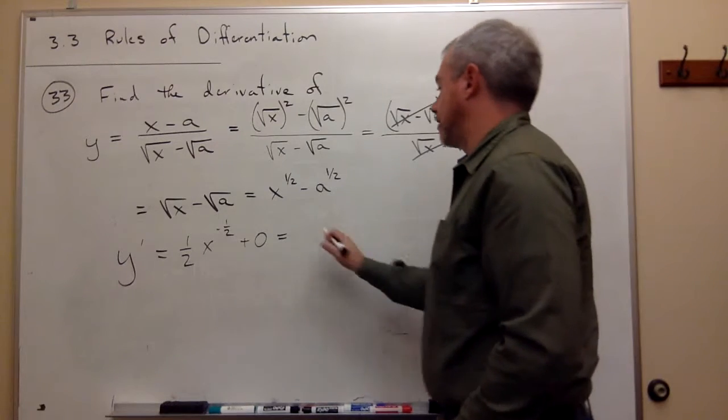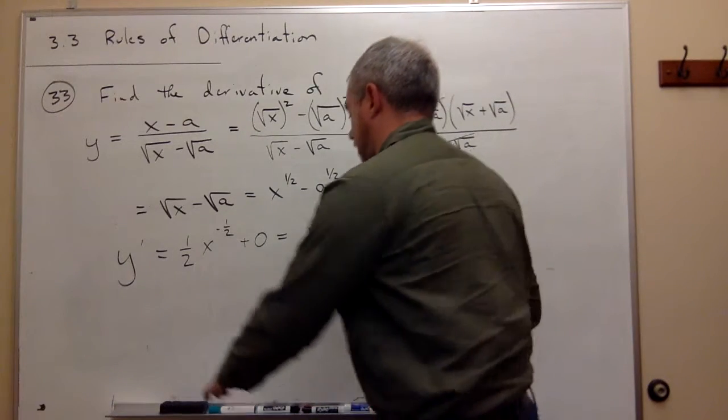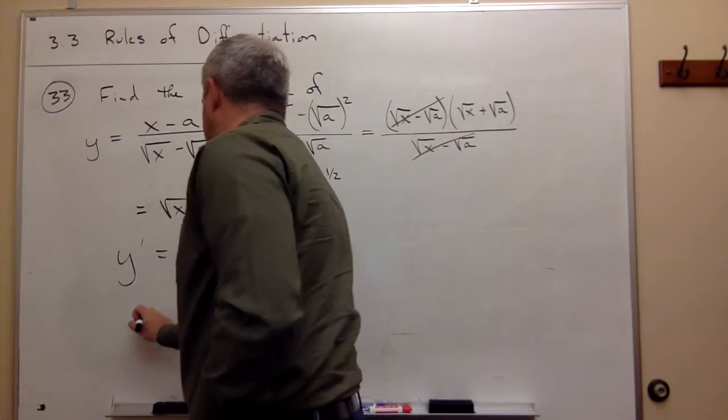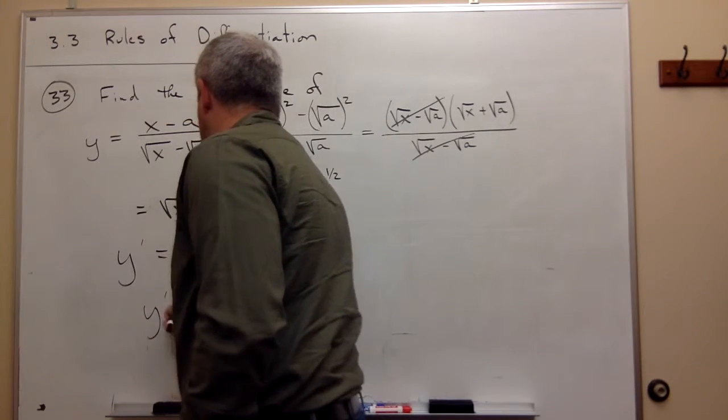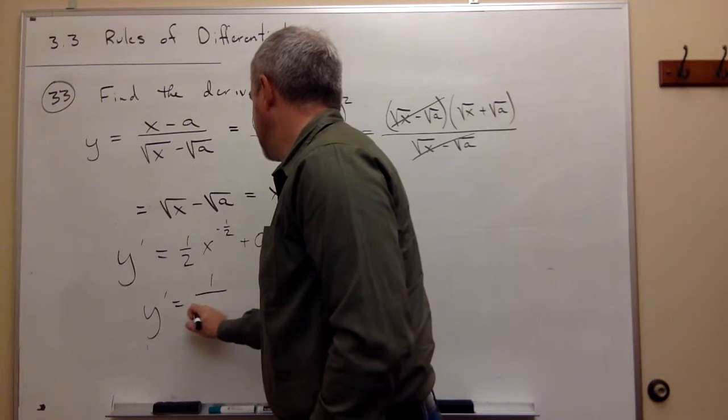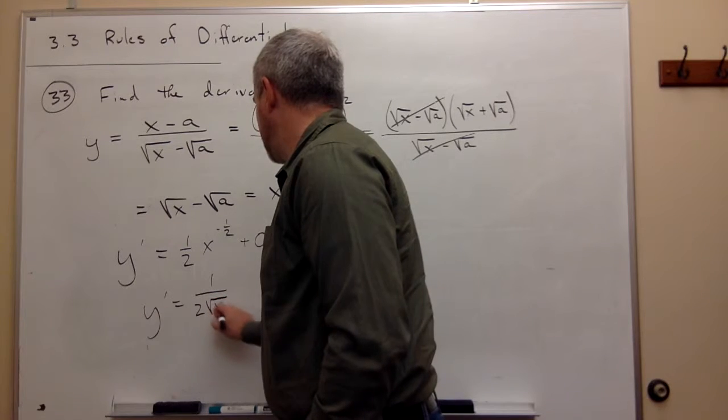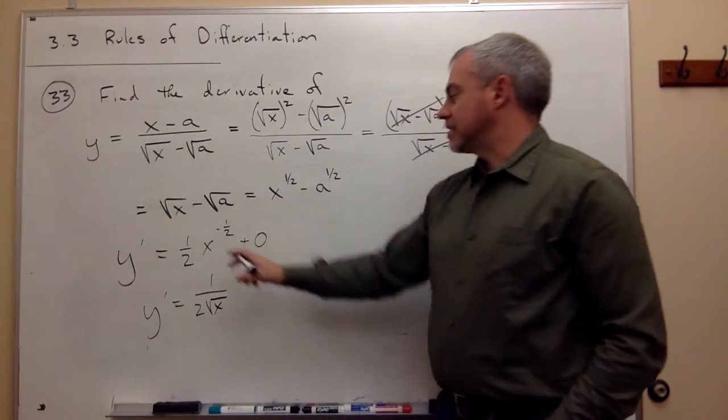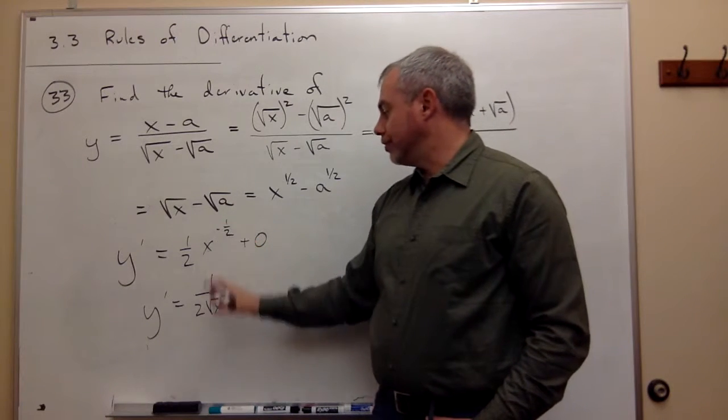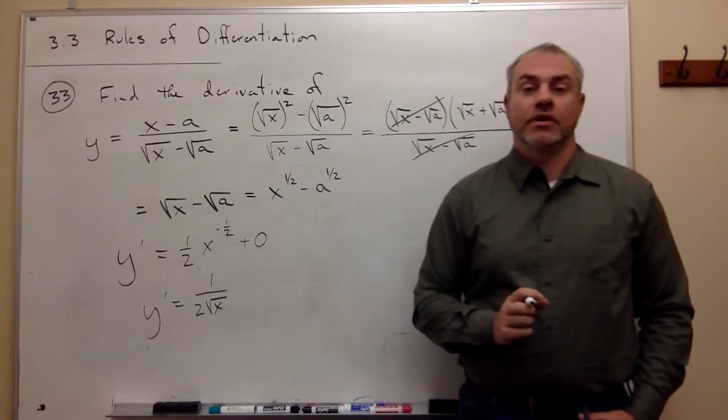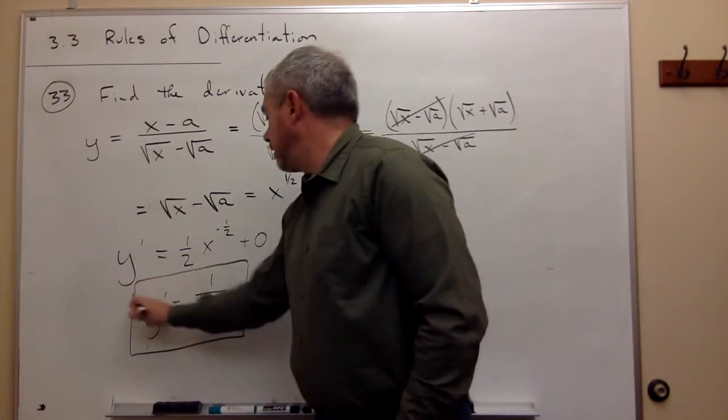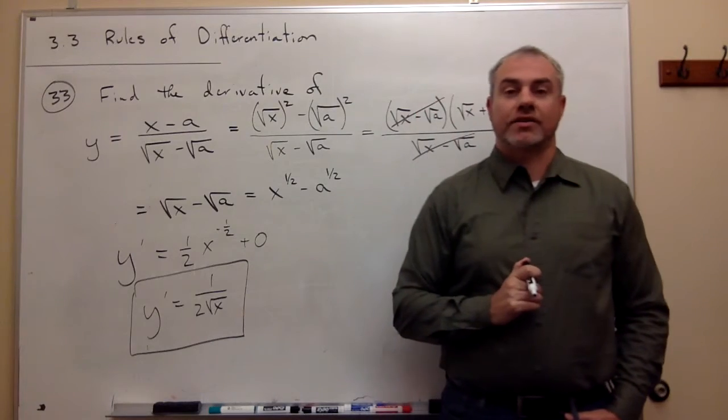And if I wanted to rewrite this, I could write it a little cleaner. This is y prime equals 1 over 2 square roots of x. Because x to the negative 1 half power is actually a square root of x on the bottom of the fraction. So our answer to this problem is the derivative of y is 1 over 2 square root x.